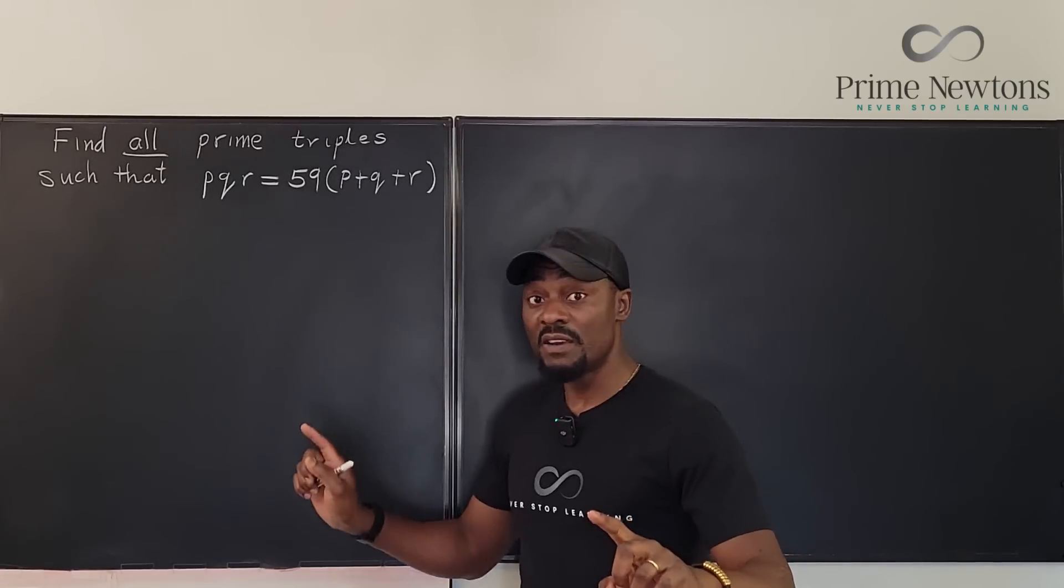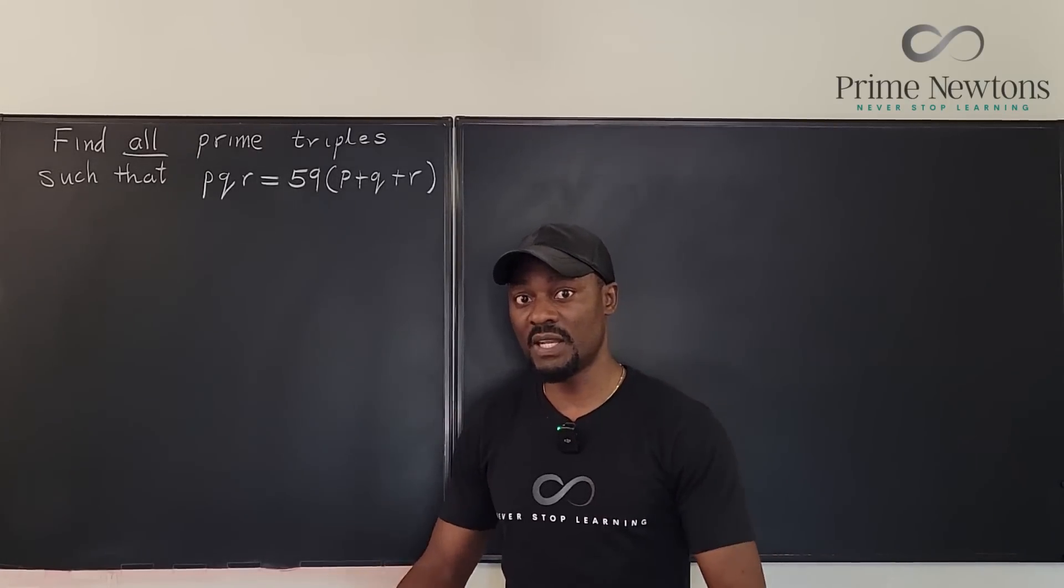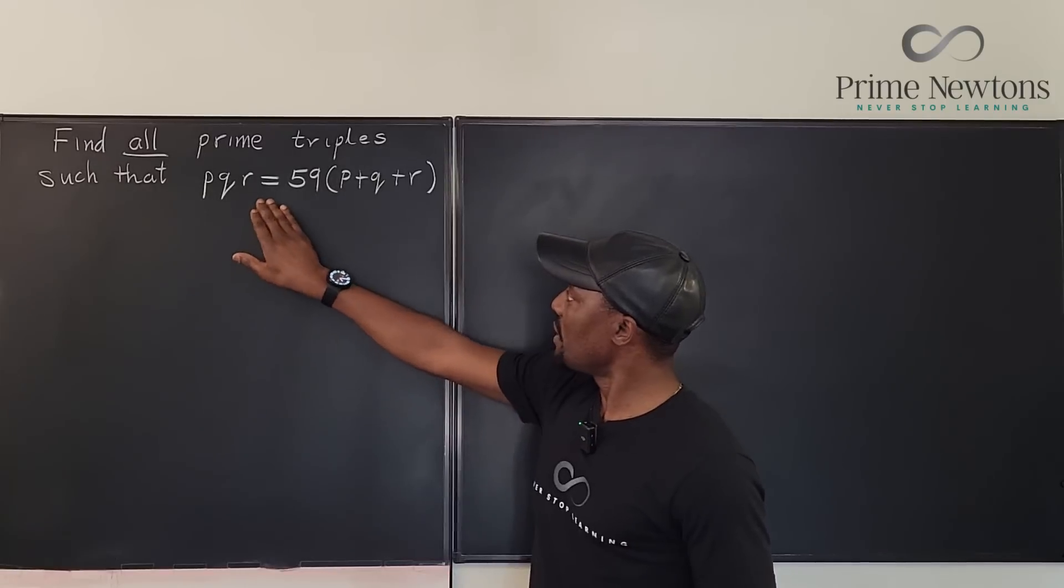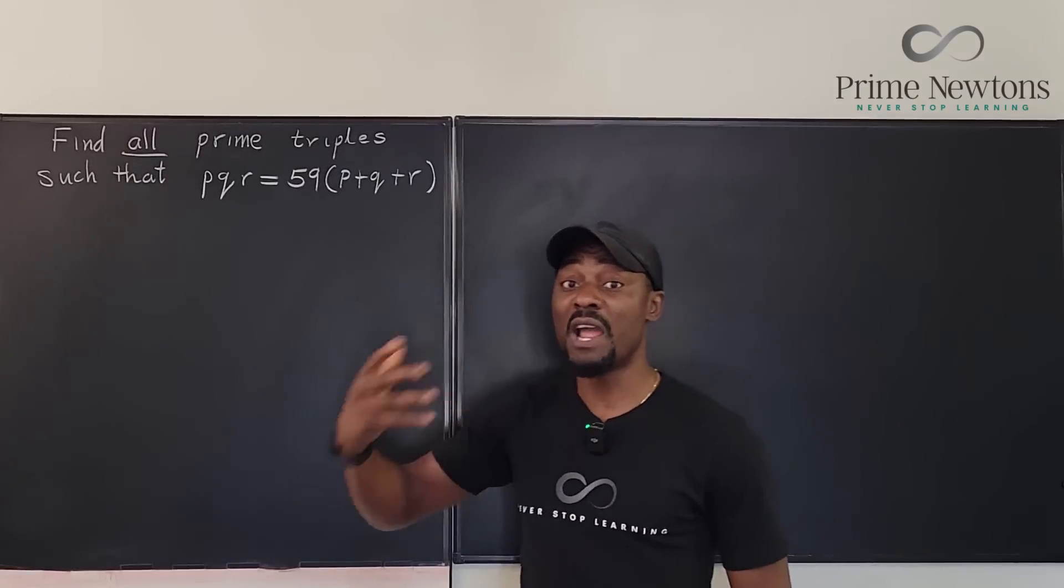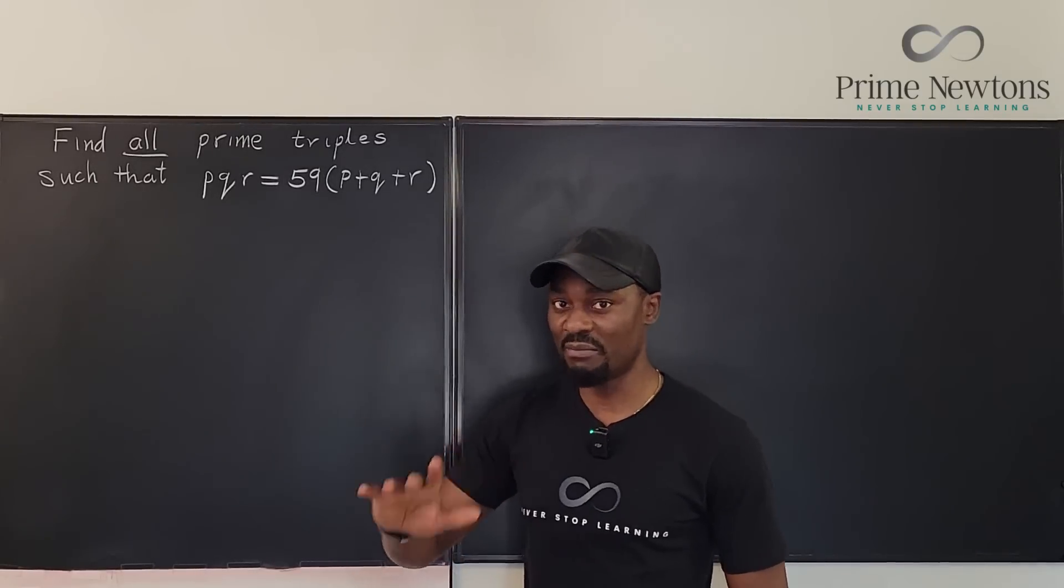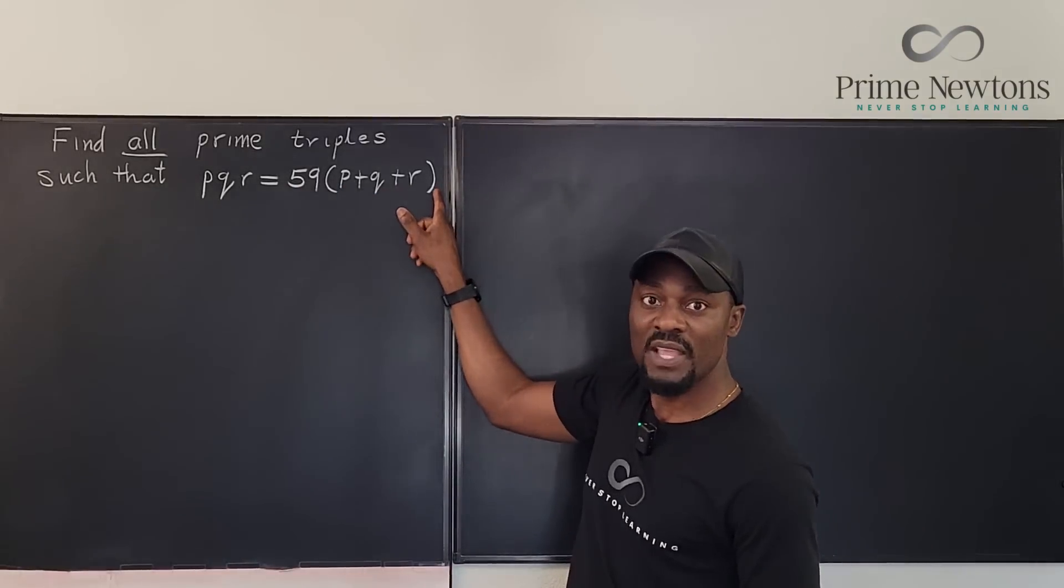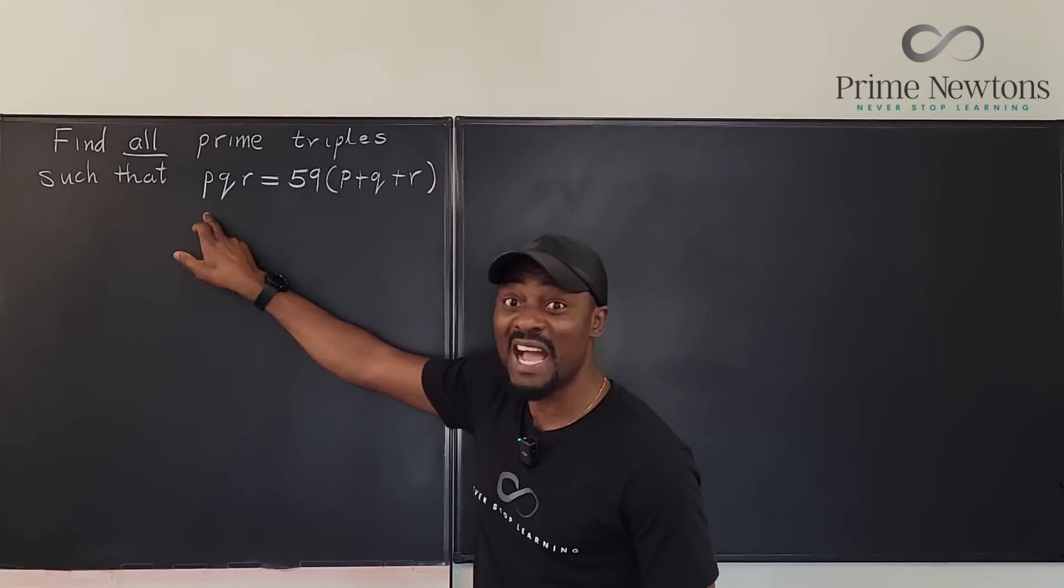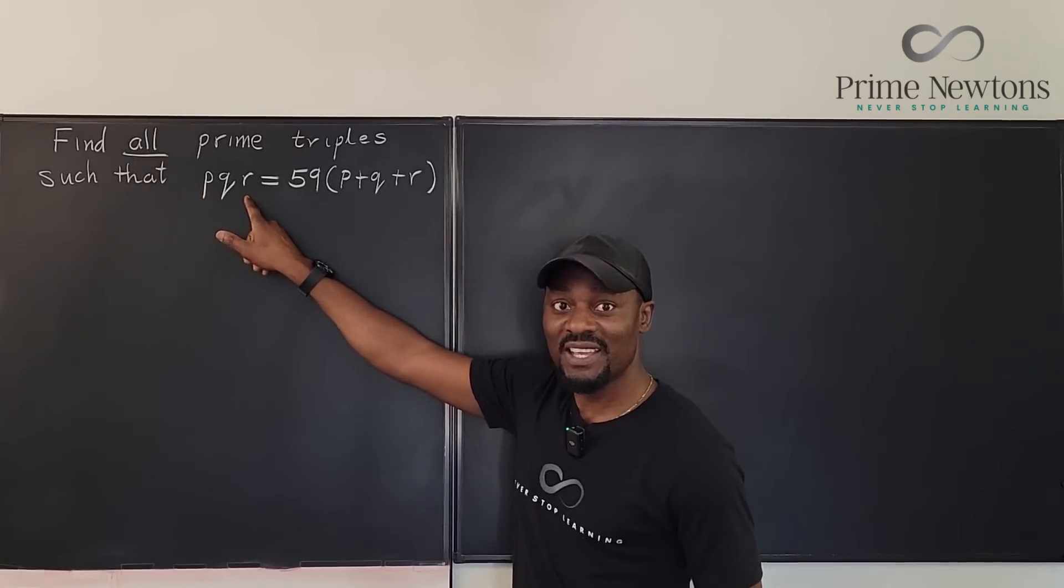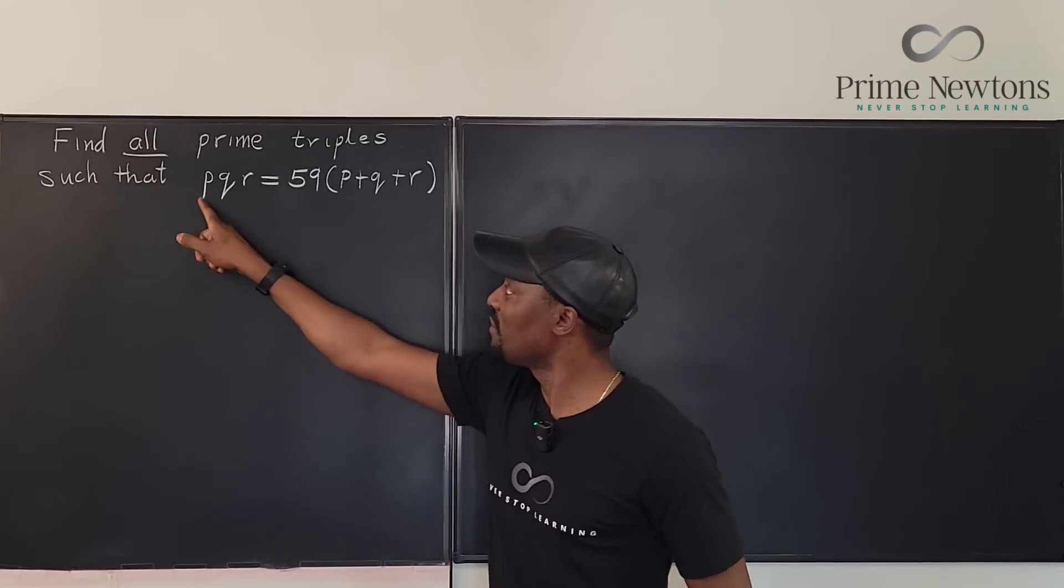The solution I'm going to use here is exactly what Nate did in the work that he sent me because I found it very clean and easy to follow. So let's look at the problem: PQR equals 59 times P plus Q plus R. What makes prime number problems easier than other problems with composite numbers is that you know some divisions are impossible. For example, we can see that the right hand side is divisible by 59. If I divide this by 59, I'm going to get P plus Q plus R. And because this is an equation, the left hand side must be divisible by 59.